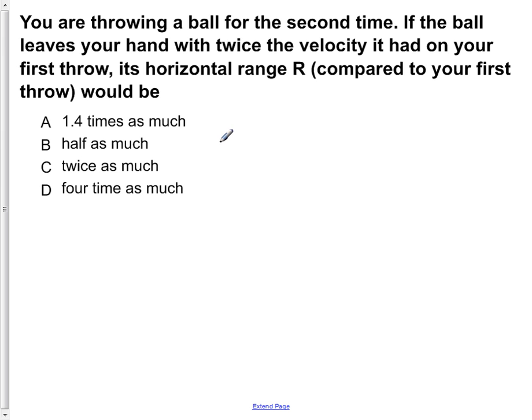You are throwing a ball for the second time. If the ball leaves your hand with twice the velocity it had on your first throw, its horizontal range R compared to your first throw would be: A, 1.4 times as much; B, half as much; C, twice as much; or D, four times as much.